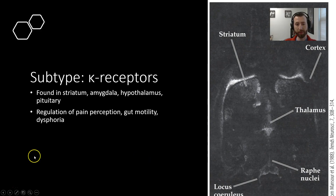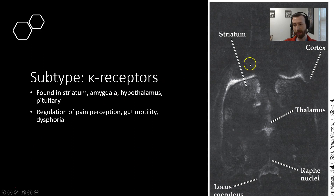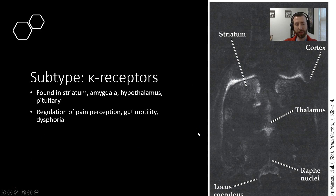Kappa receptors are found primarily in the striatum, amygdala, hypothalamus, and in the pituitary, as you can see over here. These are involved primarily in the regulation of pain perception, gut motility, and dysphoria.